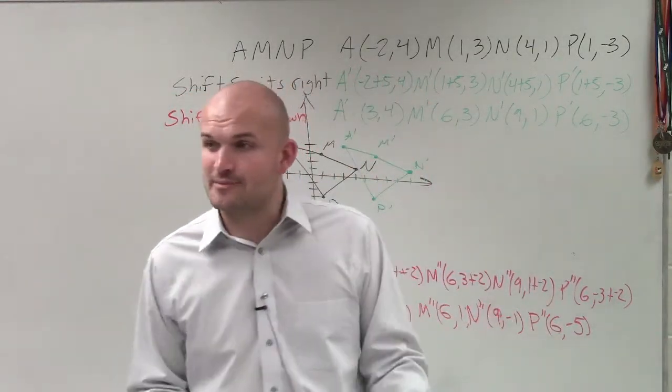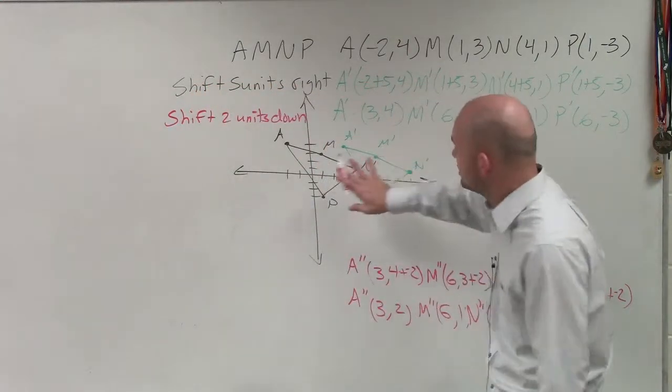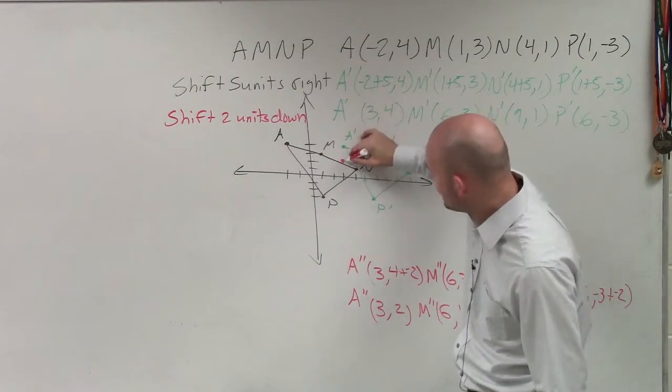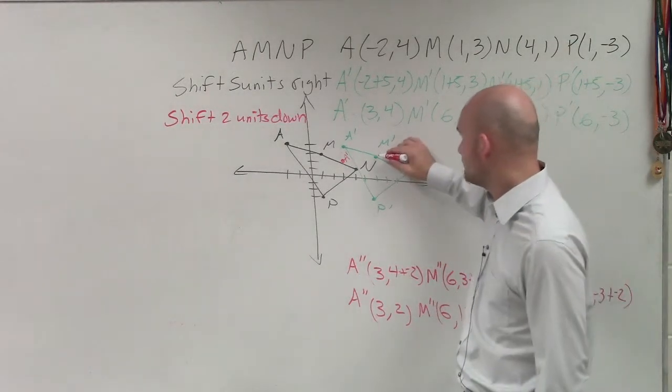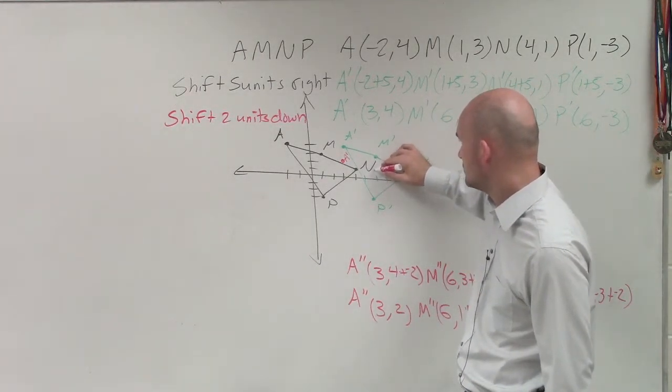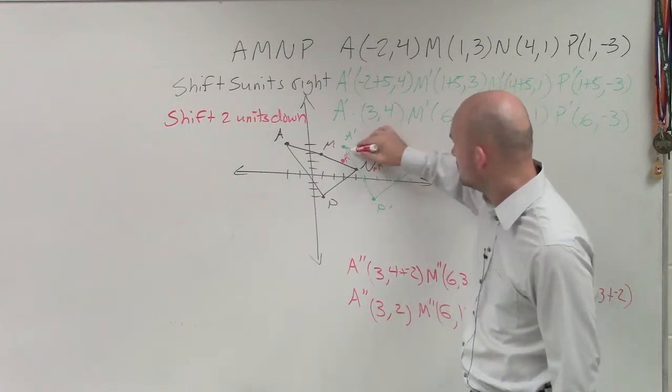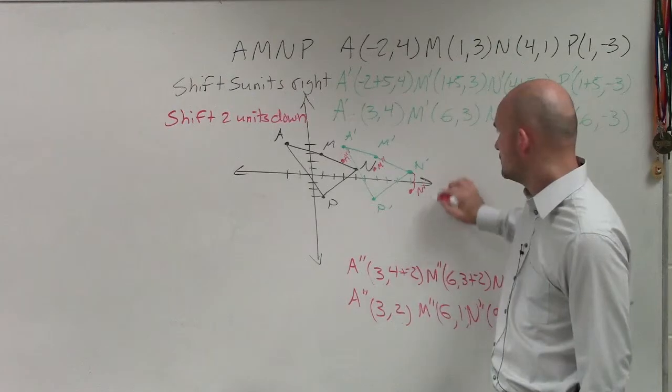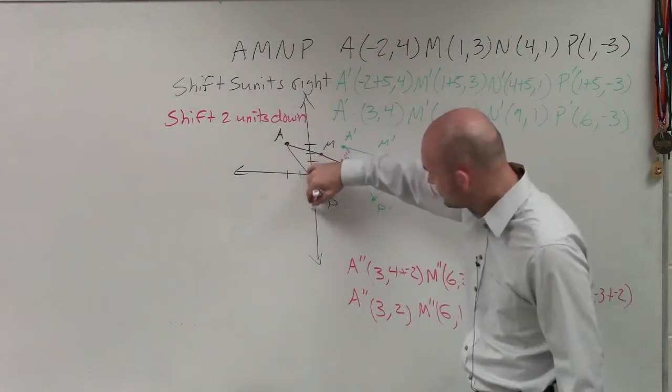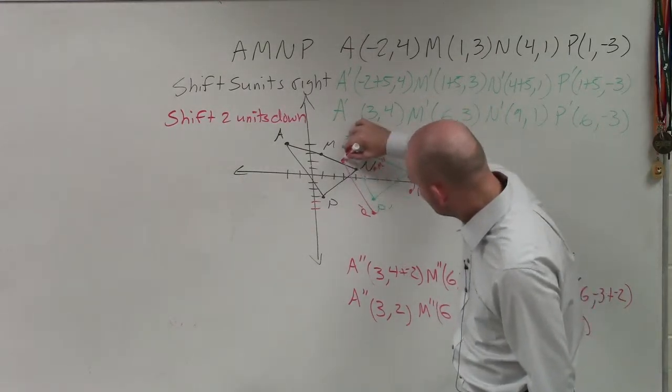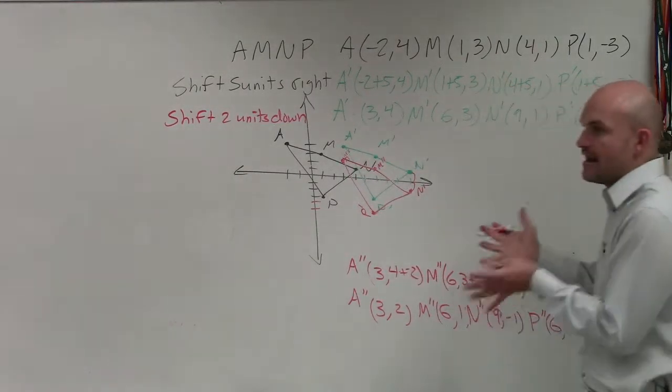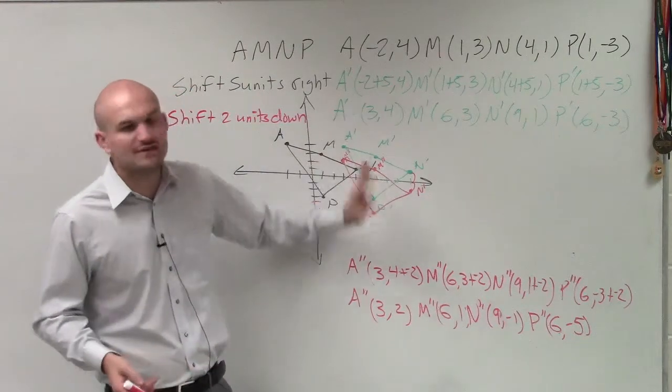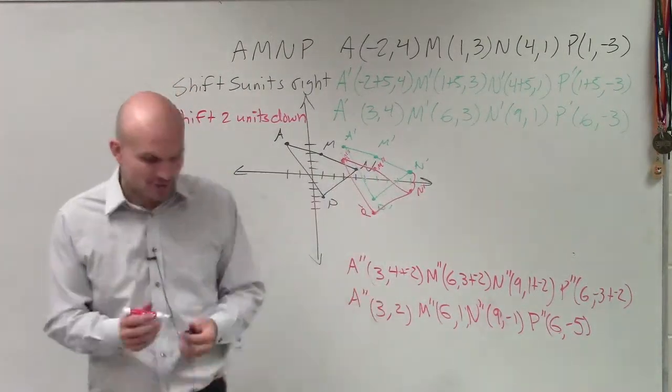Now, you guys can go ahead and find all those points by using these transformations. But if I'm asking you to graph it, and you don't need to find the points, you guys can also just, if you shift it right 5 units, is it OK for me just to take this point and go down 2 units and say that's a prime? Does that kind of make sense? Can I take this point and then just go down 2 units? I can get everything else. If I have N, can I just go down 2 units? N prime. And can I have P? Can I just go down 2 units?